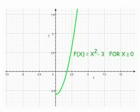So what you should see now is the graph of f of x equals x squared minus 3 for all x greater than or equal to 0. It's got a vertex at 0, negative 3. It opens up, but it's just the right-hand side of it since x is positive.